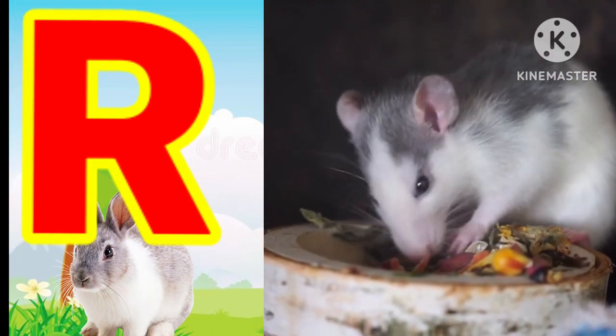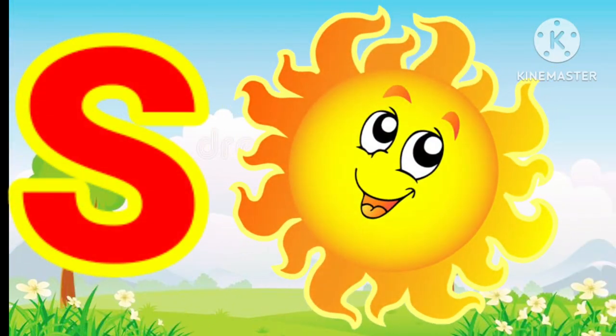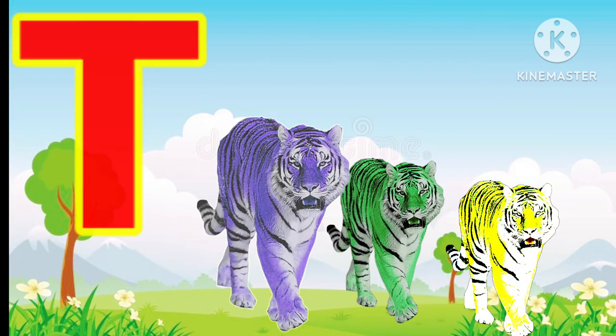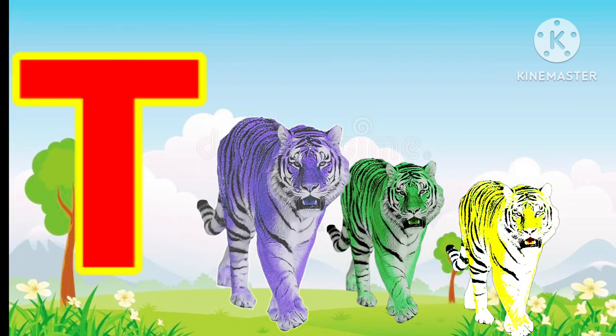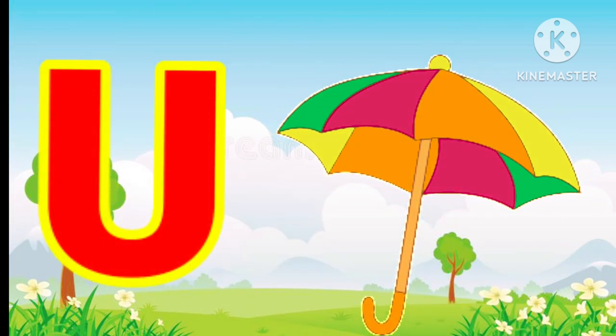R for red, S for sun, T for tiger, U for umbrella.